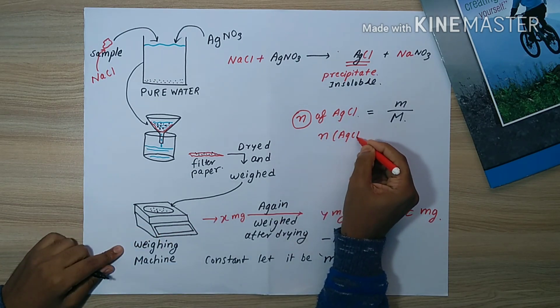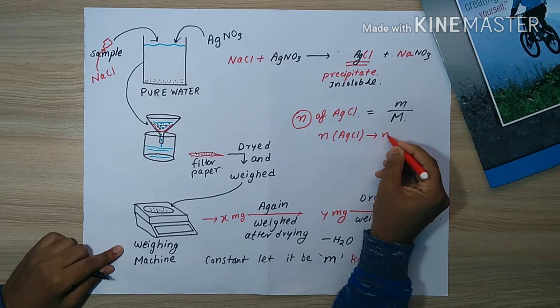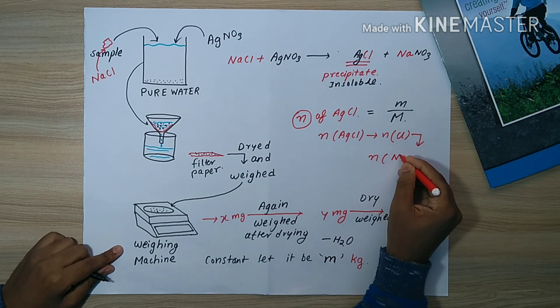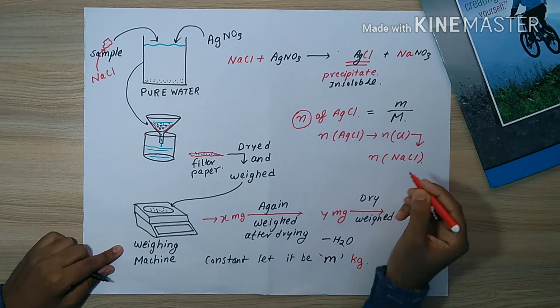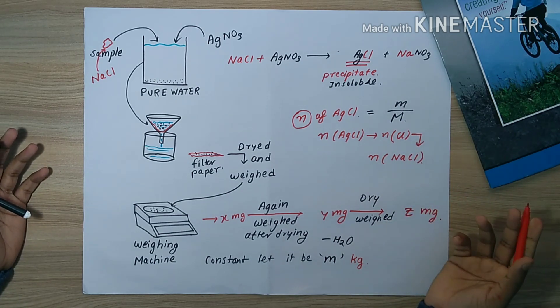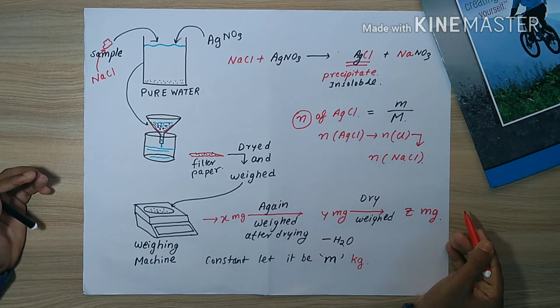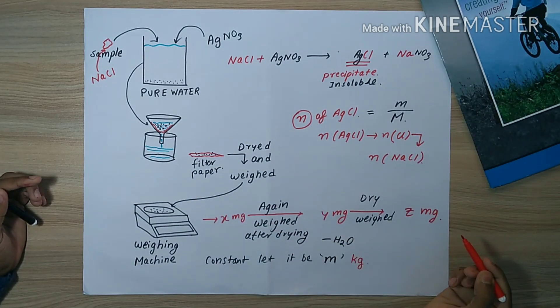From that we get the number of moles of chlorine, and from that we can estimate the number of moles of NaCl. This determines its concentration in the sample. This is how we use gravimetric analysis.